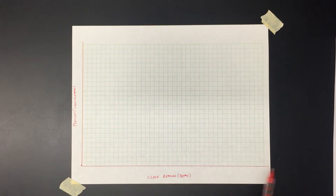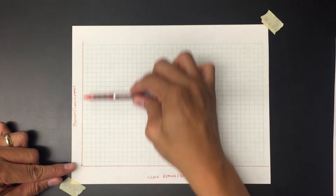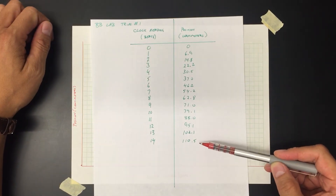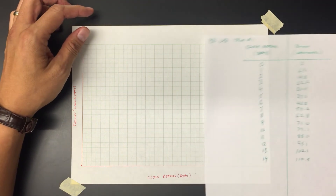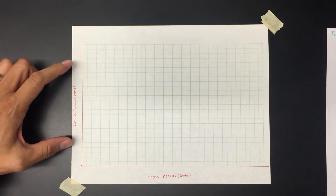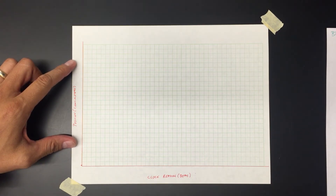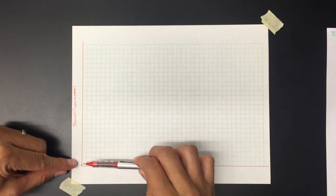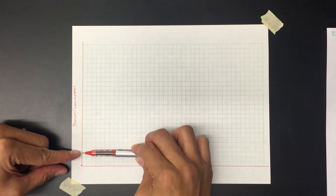Now we have to scale the graph. To scale the graph you really need to count the number of squares you have. I count 26 squares going this way and 40 squares going this way. Looking at the data, on the x-axis I need to get to 14 beats across those 40 squares, and on the y-axis I need to reach 110.5 centimeters across the 26 squares. You divide your maximum data value by the number of squares: 110.5 centimeters divided by 26 squares gives 4.25 centimeters per square. 4.25 is really difficult to count by.